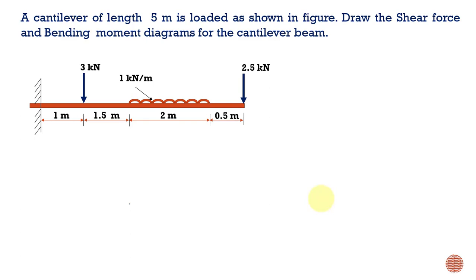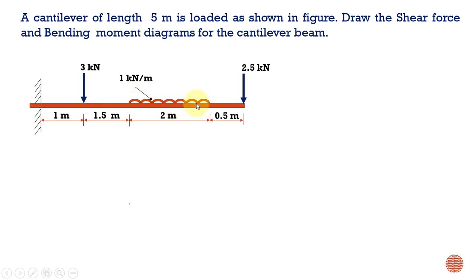Welcome to this lecture. Today we are going to see how to draw shear force and bending moment diagram for a cantilever beam. A cantilever of length 5 meters is loaded as shown in the figure. Draw the shear force and bending moment diagram for the beam. The cantilever beam is subjected to different loads: a point load, a uniformly distributed load at one portion, and another point load.